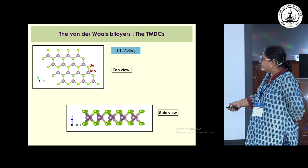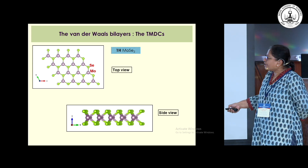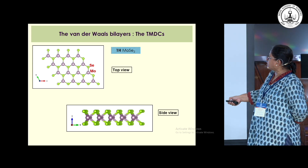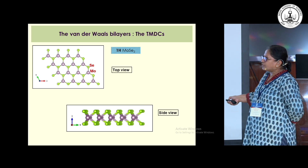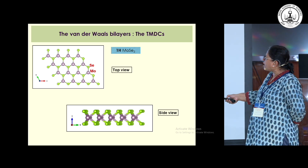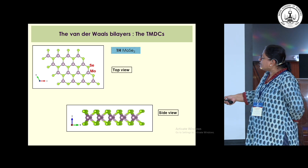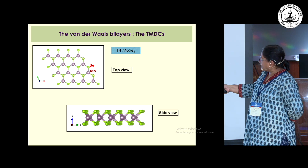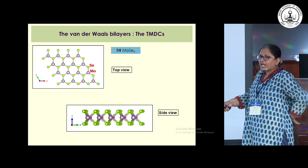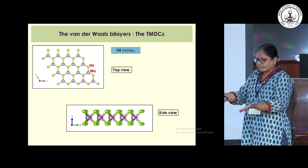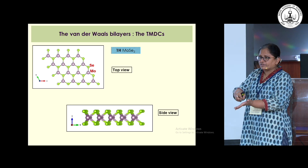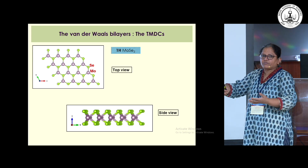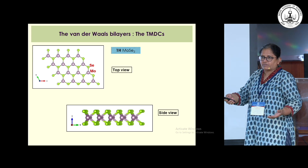Within this layer, the interactions are very strong. However, when you have one more layer, the interaction is very weak and is van der Waals type. So what happens is you can just take a piece of scotch tape, put it on these layers, pull it out, and you can pull out one or more layers at a time.